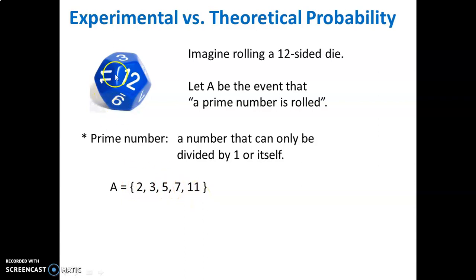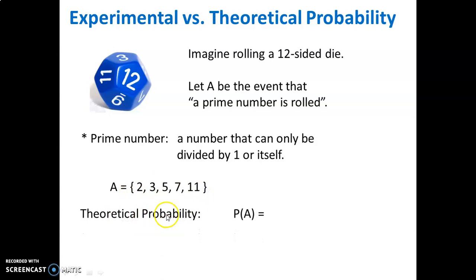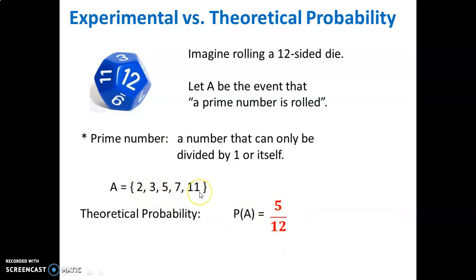Of the twelve rolls, five of them are prime numbers. Therefore, the theoretical probability is: if you roll a twelve-sided die, the probability of getting a prime number is five out of twelve — five possibilities out of all twelve possible outcomes. That's our theory.